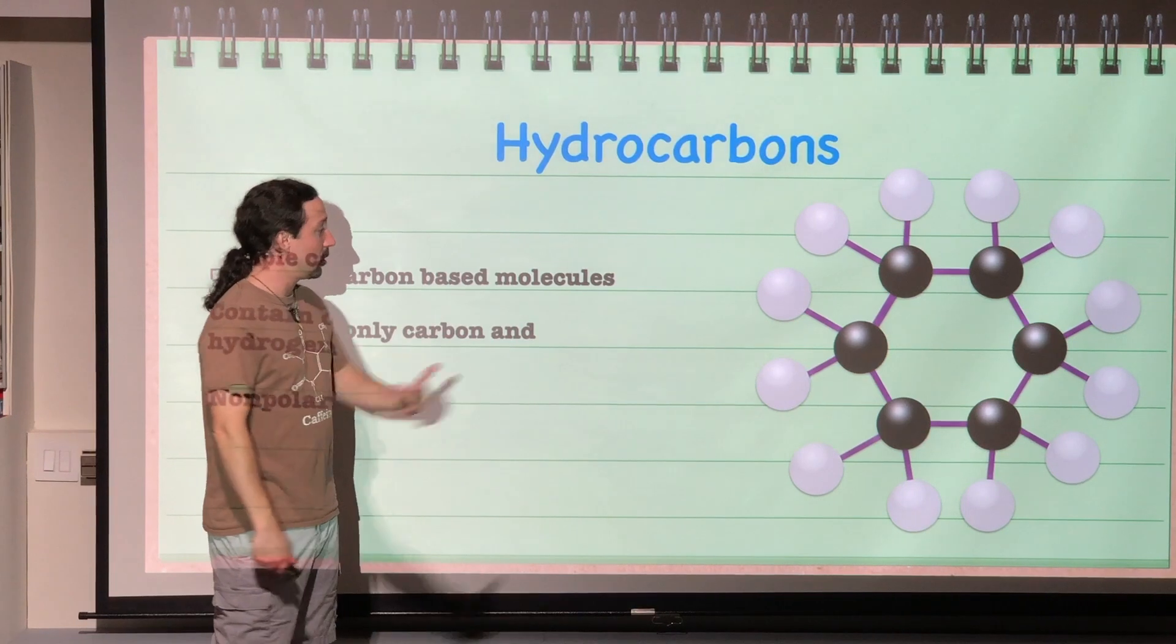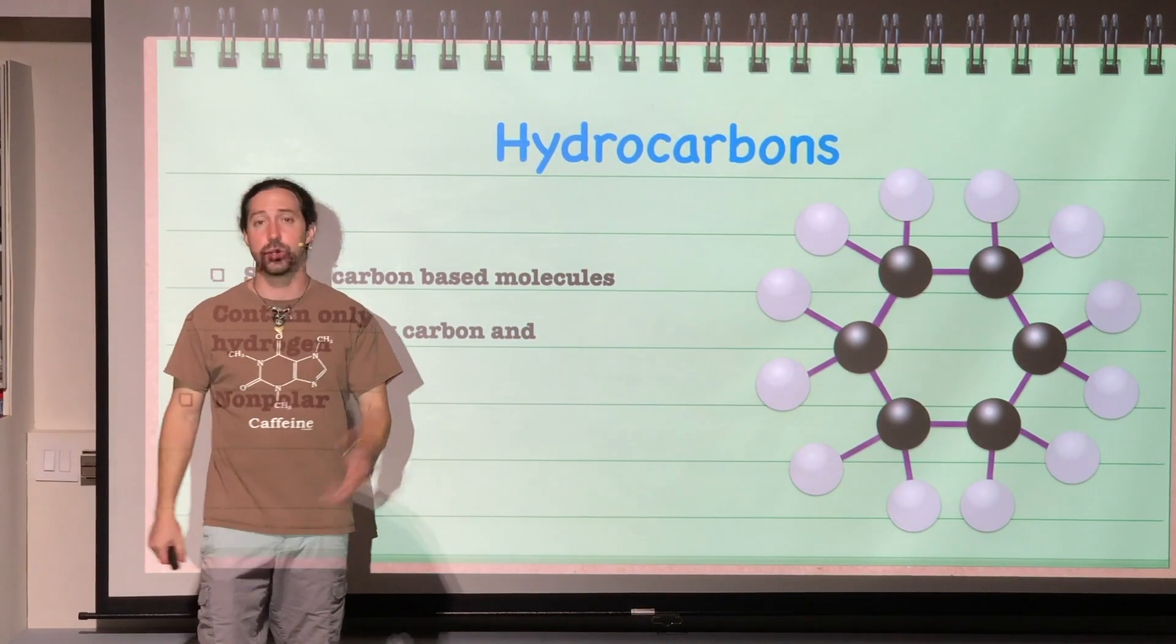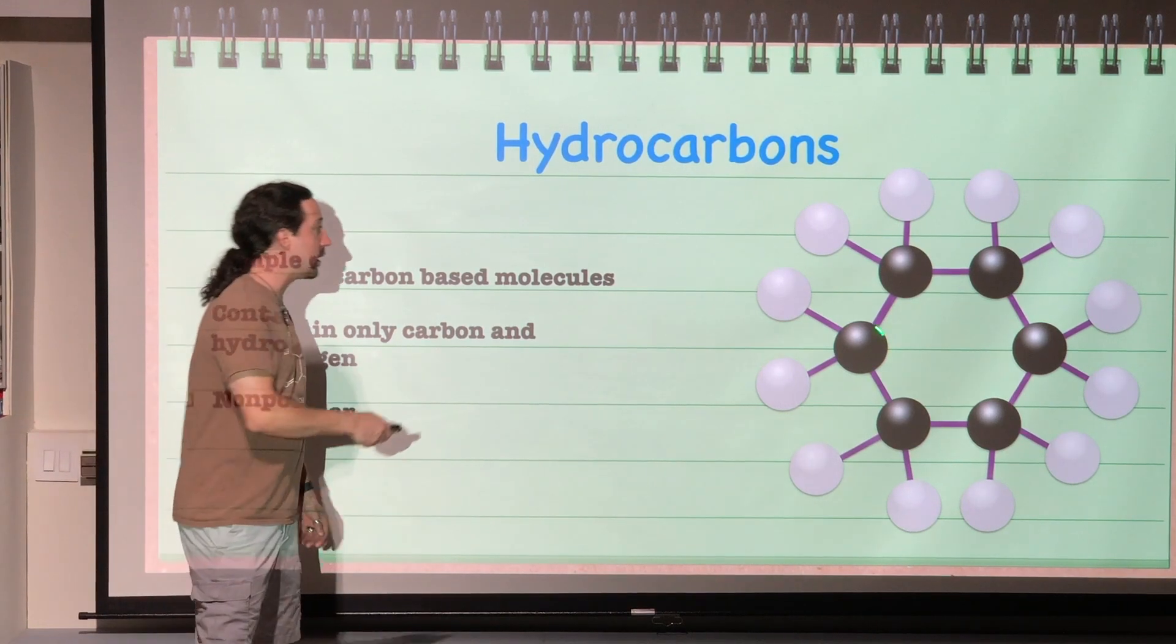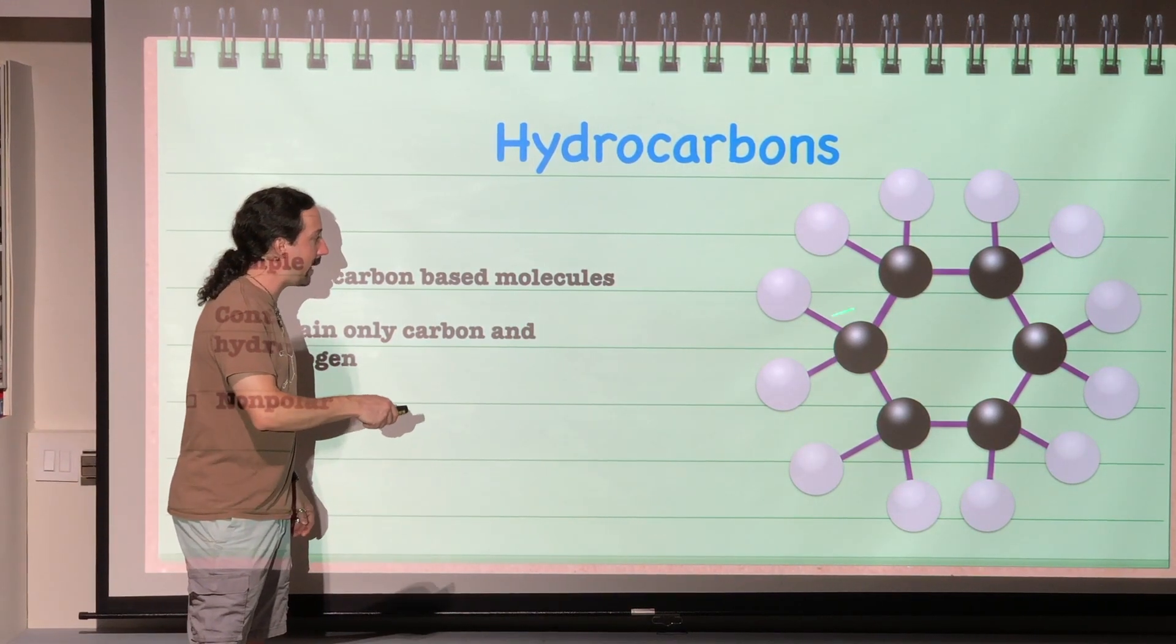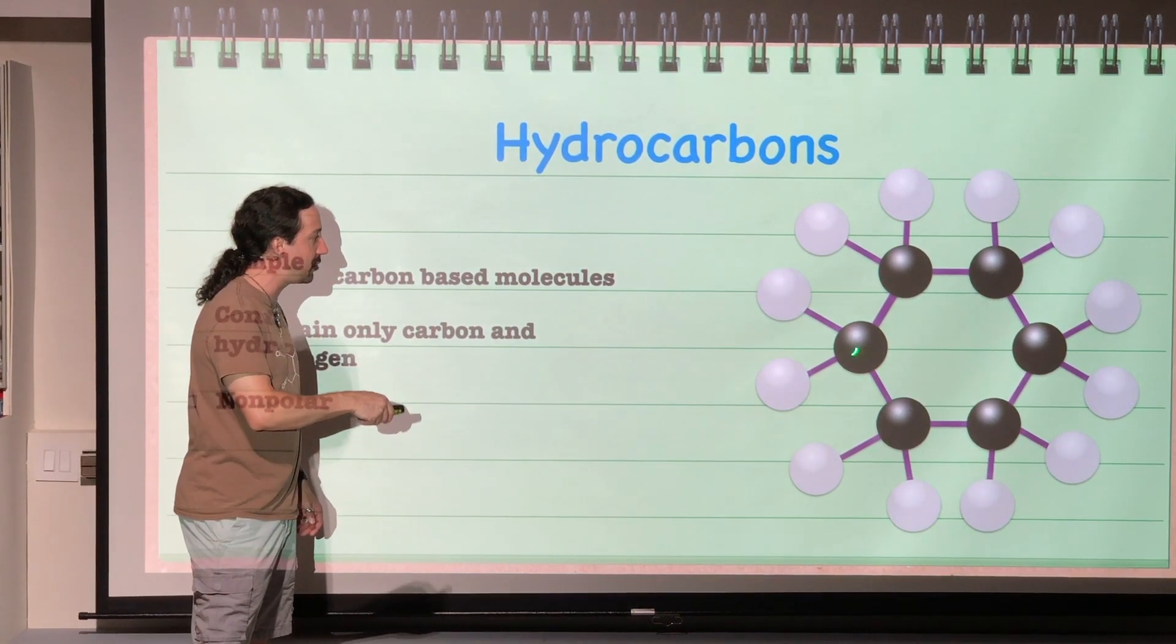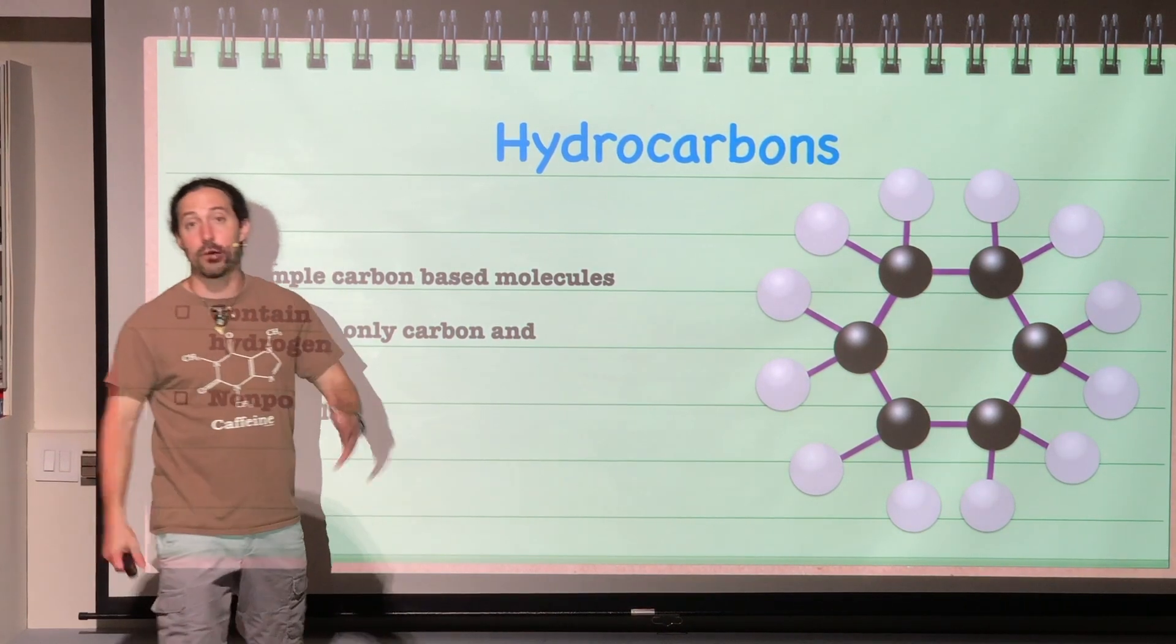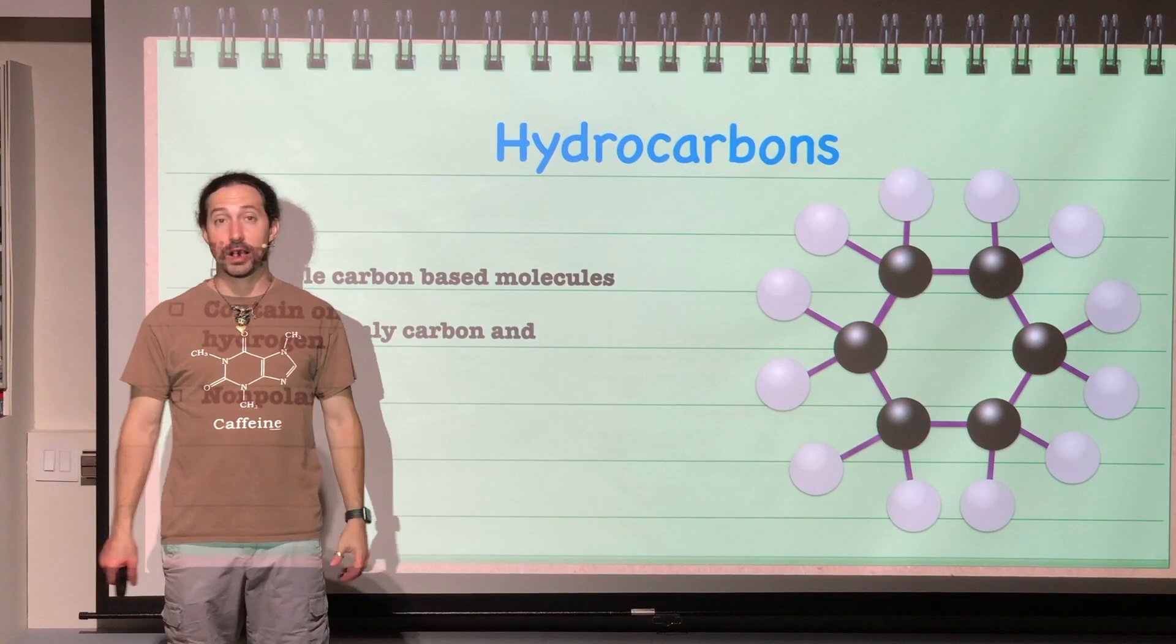And we could just go on and on and on, we could just keep adding carbons. Or we could put it into a ring. Okay, so we could change this out and we can make it where the carbon goes into a ring structure. Again, remembering that each carbon makes its four bonds. So this carbon is bonded to two other carbons and two hydrogens. So here we happen to have C6H12 in a ring.